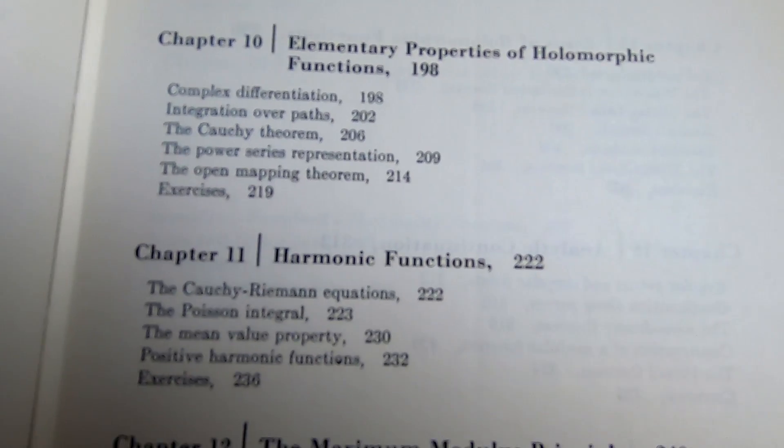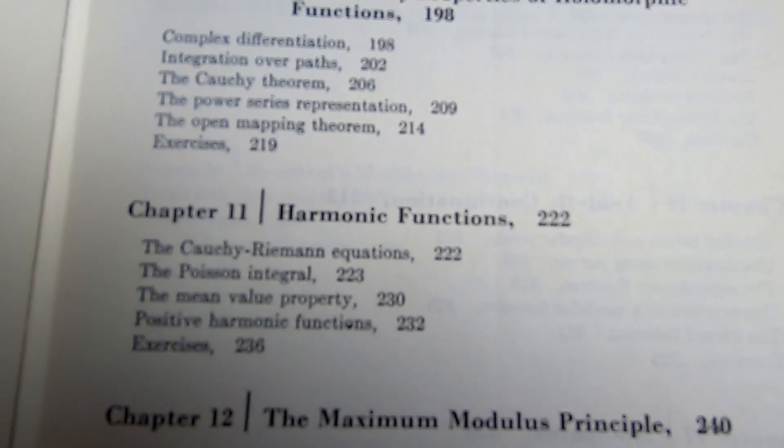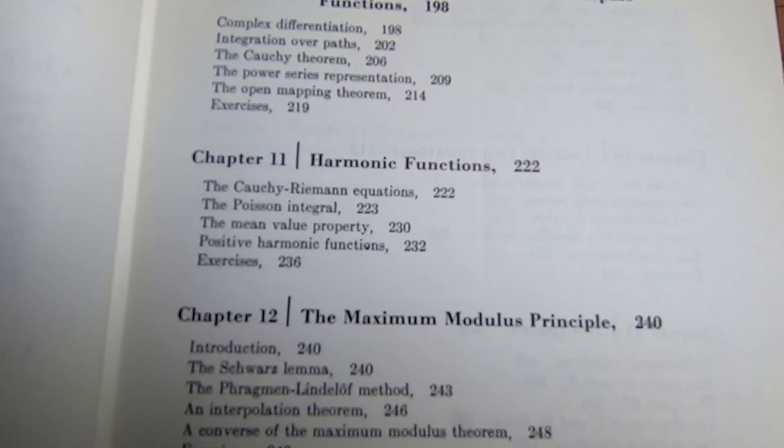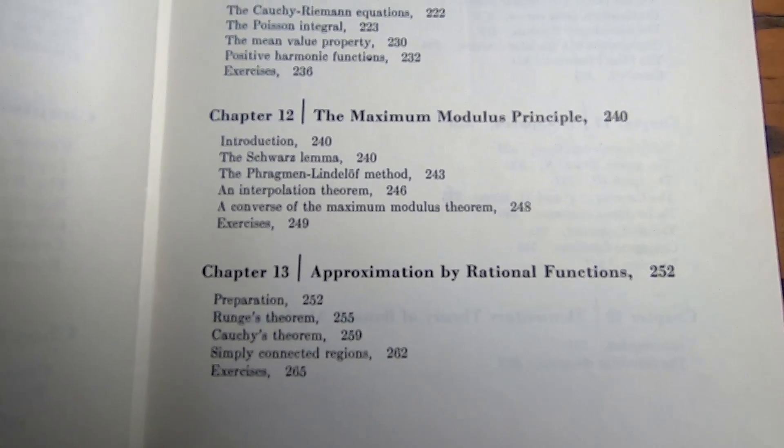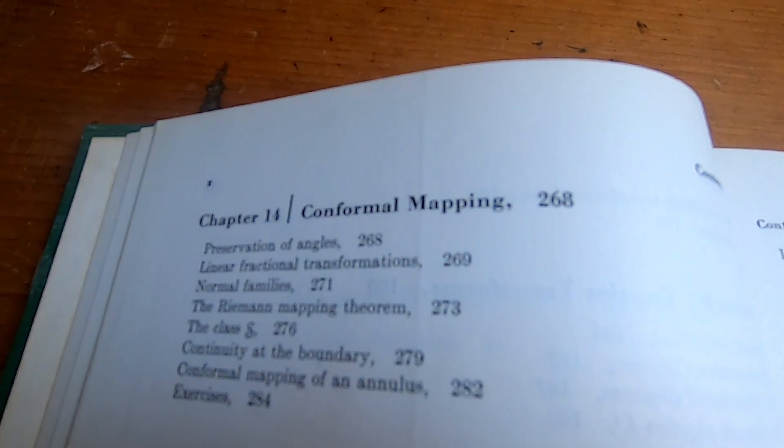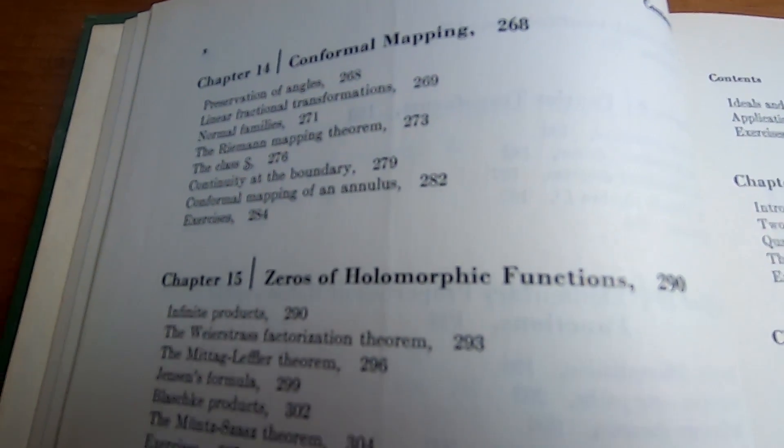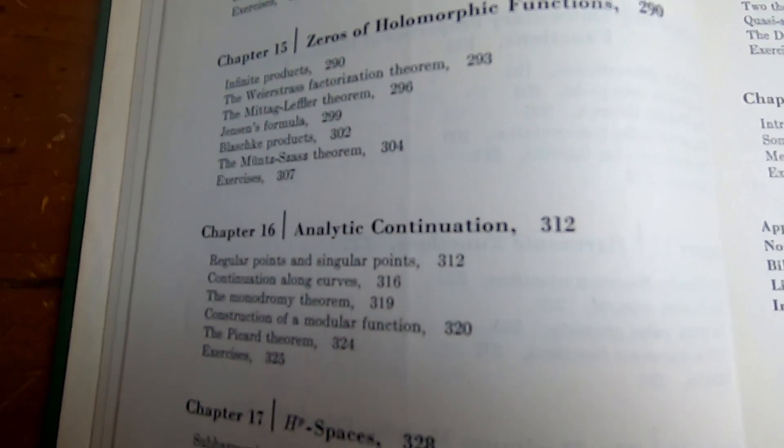So this is something you might have already seen if you've had some complex analysis. Look, Cauchy-Riemann equations. If you've studied complex analysis, some of this will be familiar. The maximum modulus principle. Approximation by rational functions. And he just keeps going. Conformal mapping. Zeros of holomorphic functions. Analytic continuation. That's always a really difficult topic.